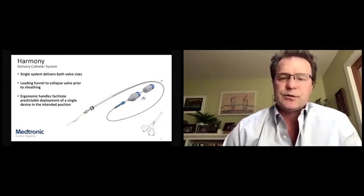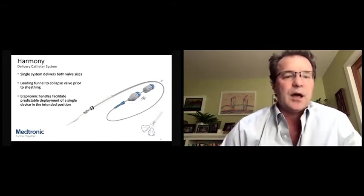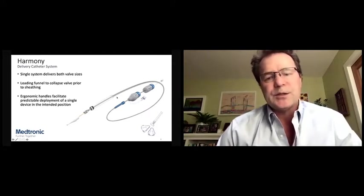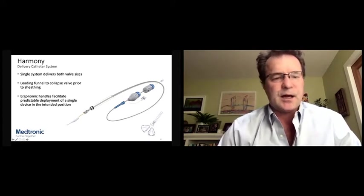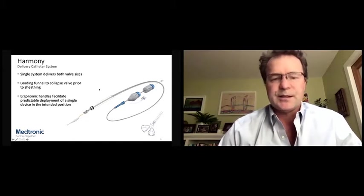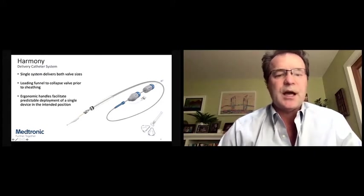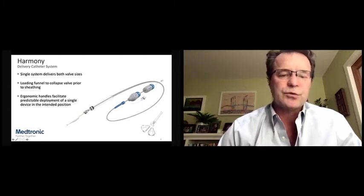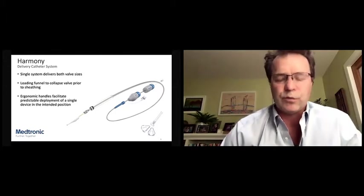So as the name suggests, the TPV22 has a 22-millimeter valve. The TPV25 has a 25-millimeter valve. And then the inflow and outflow portions of the device are substantially wider to conform to the highly variable right ventricular outflow tract anatomy. The Harmony valve is delivered with a dedicated delivery system that is useful for both sizes. There's a loading funnel system that collapses the valve, so it doesn't require a cold ice water bath to collapse the nitinol.